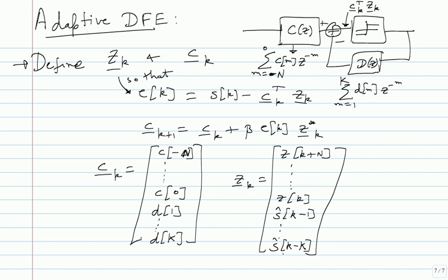DFE is expected to perform better than the MSE linear equalizer, so one might prefer DFE in practice. But the adapting method is basically the same - you have a loop adapting your coefficients, and the input to the loop is always the error. How you compute the error varies depending on the equalizer structure, but otherwise it's exactly the same.